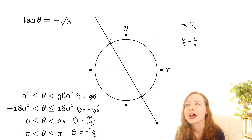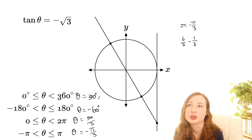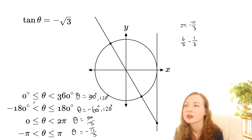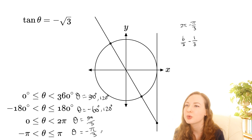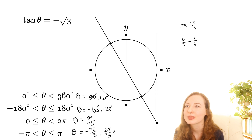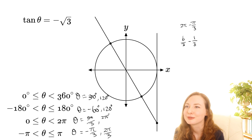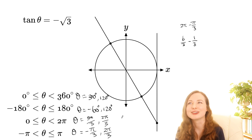Now for the other angle, in either the 0 to 360 or negative 180 to 180 range you can just call that 120 degrees, because it fits in both of those ranges. And for the radians ranges, we can call that 2 pi on 3 — that's the same for both the negative pi to pi and 0 to 2 pi ranges.